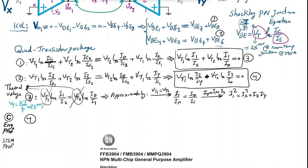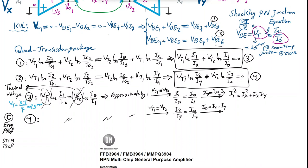Applying the same approximation Vt1 ≈ Vt2 to equation 4 gives: I2/Iy = Iout/I2, so I2² = Iy · (Ix + Iy) = Iy² + Ix·Iy. This is equation 6.